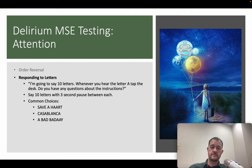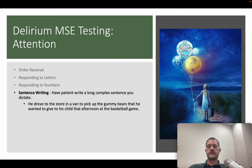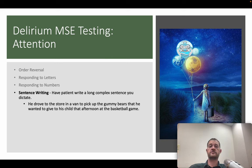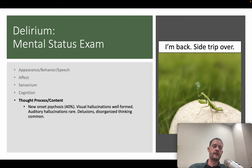Common mnemonic sequences with many A's are used for the letter-tapping test. You can also use numbers — just don't pick a pattern. Sentence writing is another option: give a long sentence in slow chunks and have the patient keep writing it down as you dictate — for example, 'He drove to the store in a van to pick up the gummy bears that he wanted to give to his child that afternoon at the basketball game.' Deliver it in segments, wait for them to finish writing each piece, then continue.